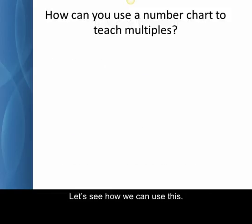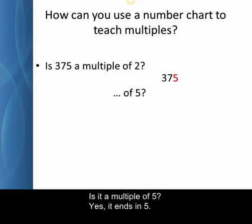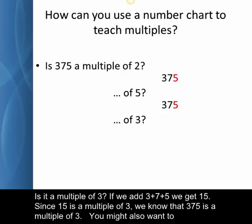Let's see how we can use this. Is 375 a multiple of 2? No, the last digit is 5, not 2, 4, 6, 8, or 0. Is it a multiple of 5? Yes, it ends in 5. Is it a multiple of 3? If we add 3 plus 7 plus 5, we get 15. Since 15 is a multiple of 3, we know that 375 is a multiple of 3.